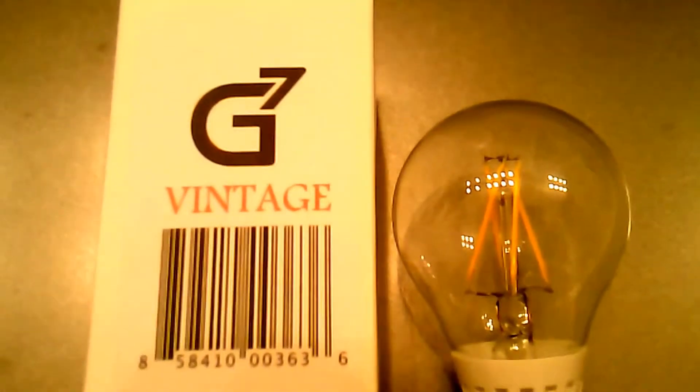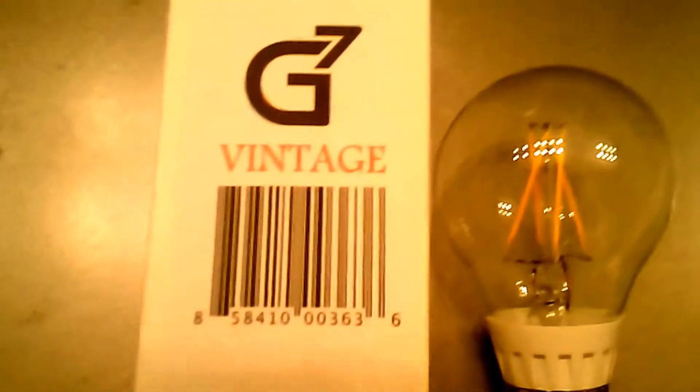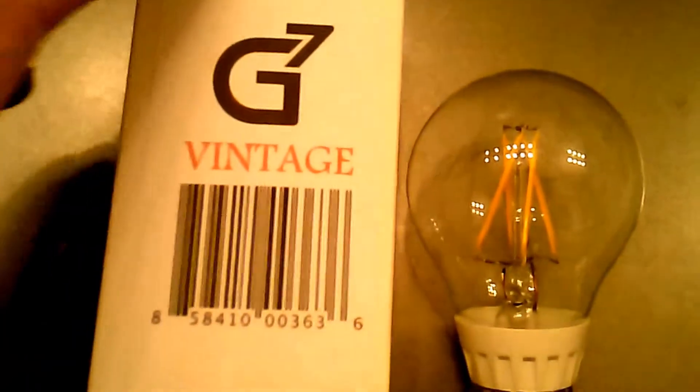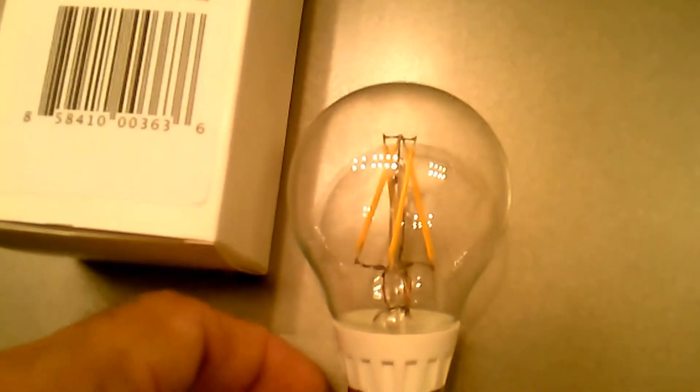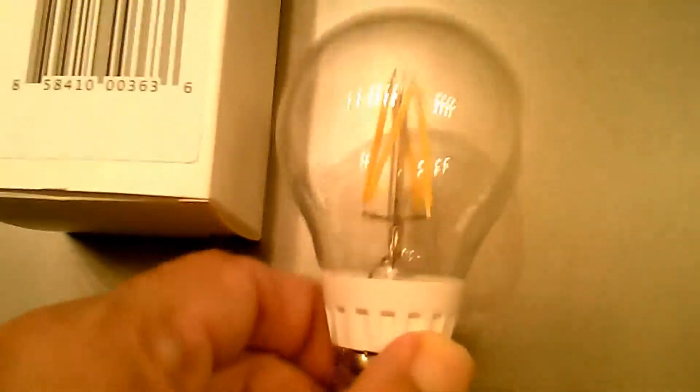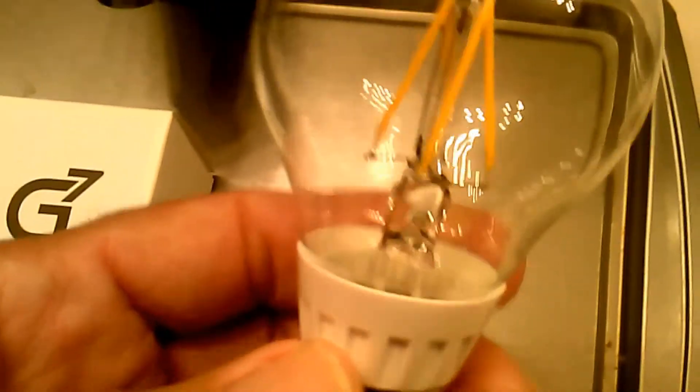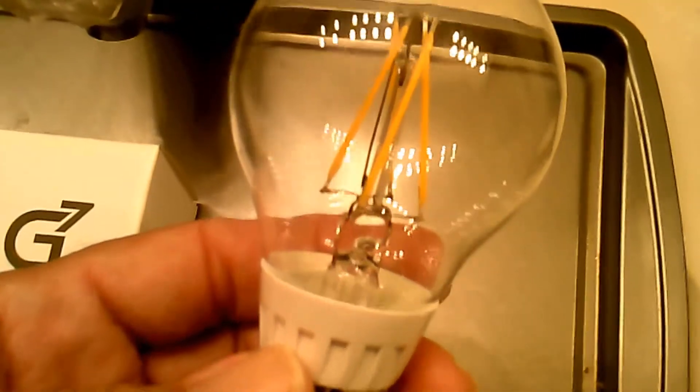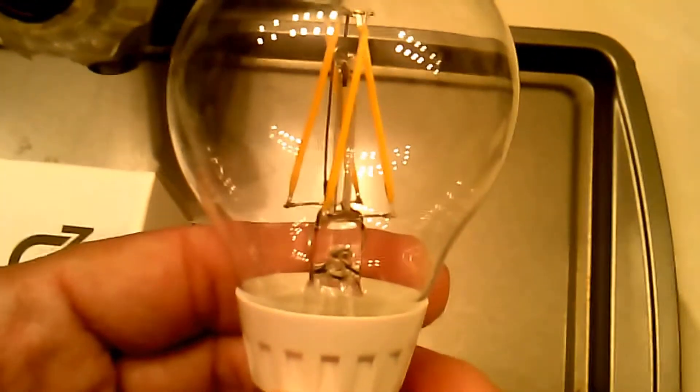I got a new product from G7 called G7 Vintage. It came in this box. As you can see, it looks like a classic Edison bulb. They say it's 500 lumens because it's a 45 watt equivalent bulb.